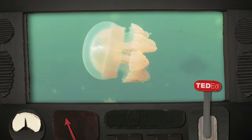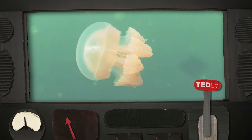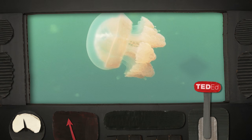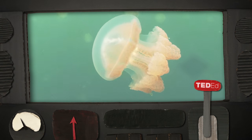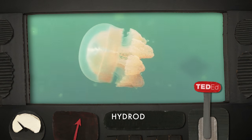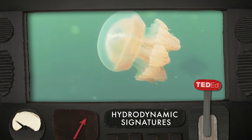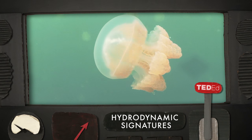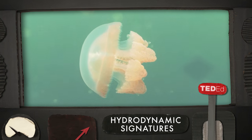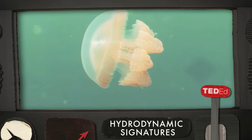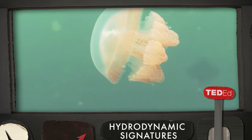But marine organisms leave footprints in the form of what we call wake structures, or hydrodynamic signatures, in fluid. Now imagine it's really hard to see these kinds of structures because fluid is transparent.